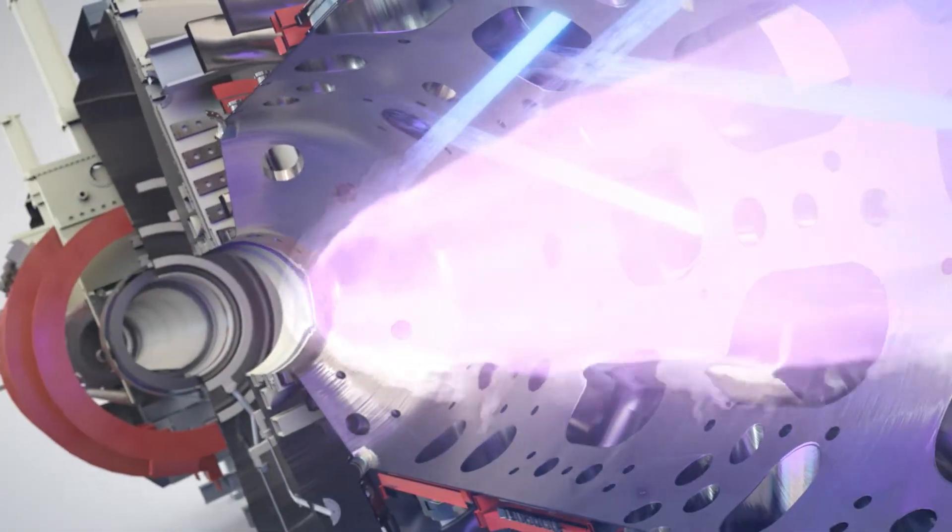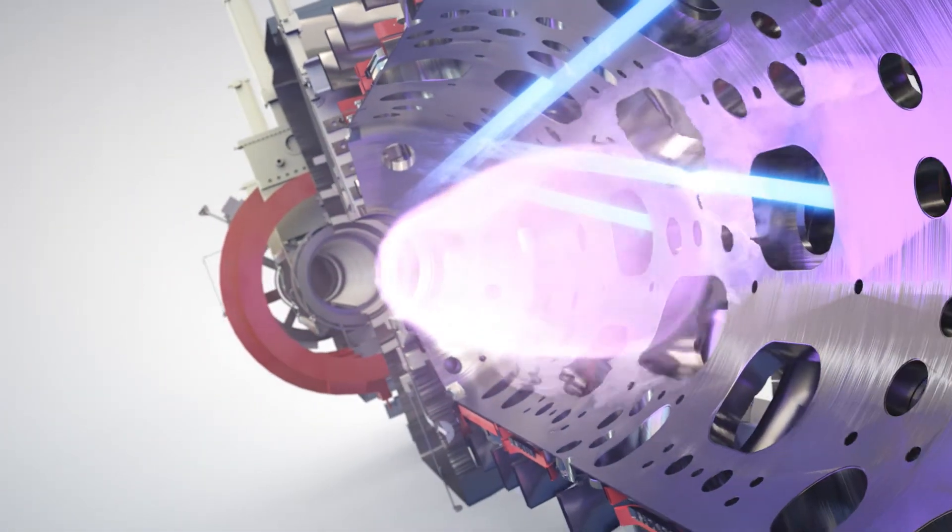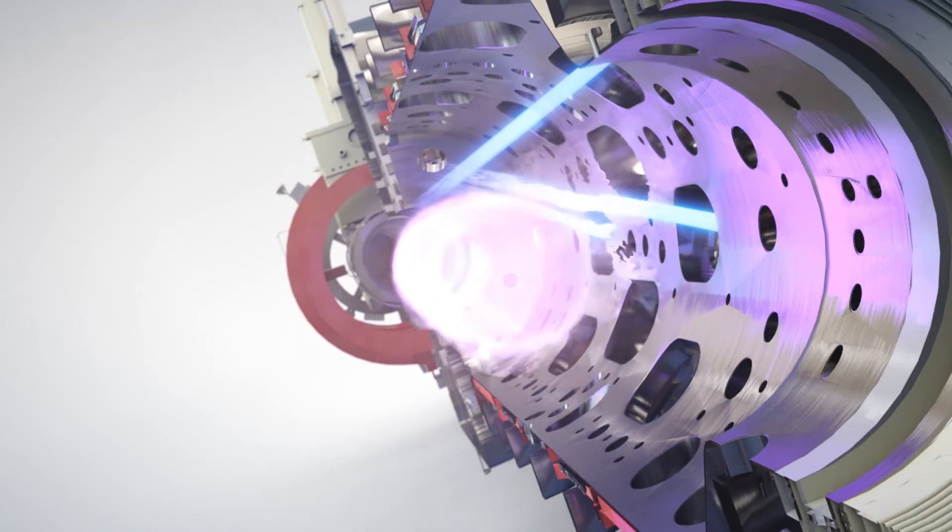Neutral beams are used to stabilize the plasma and achieve longer, higher temperature field reverse configurations.